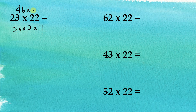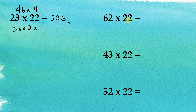So 23 × 2 = 46, and now we compute 46 multiplied by 11. The first digit is 4. The sum of the two digits 4 and 6 is greater than 9, so we write 5 here. The sum equals 10, so this digit becomes 0, and the last digit is 6. So 23 × 22 = 506.